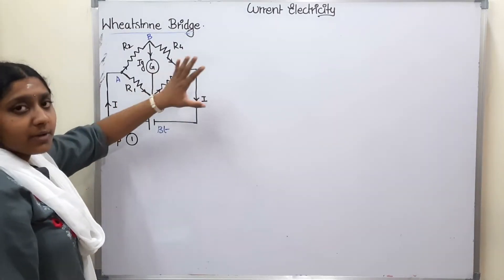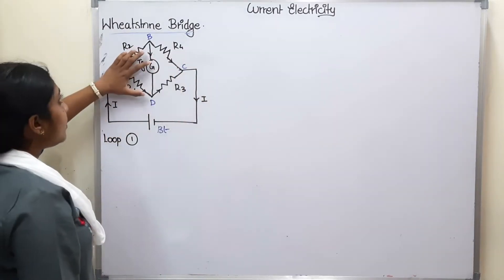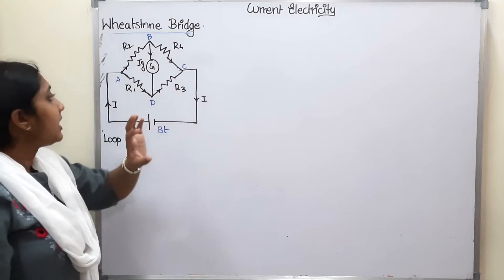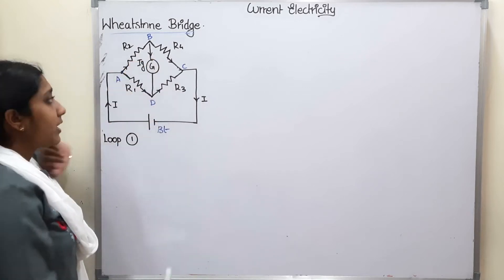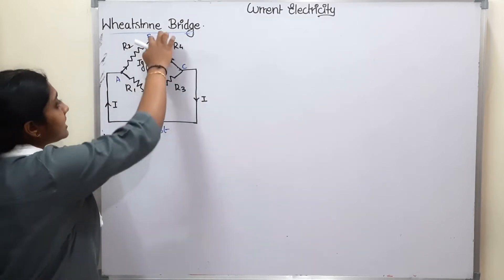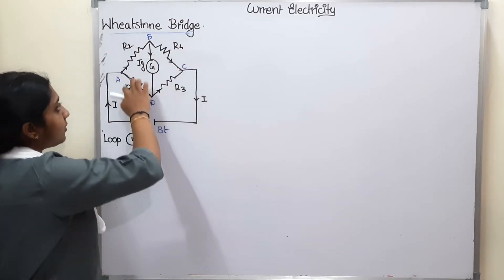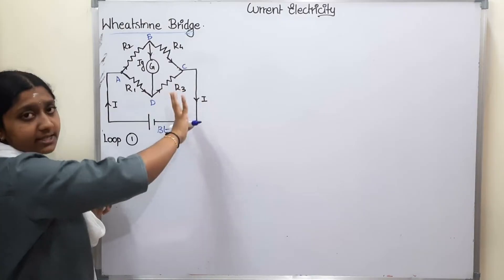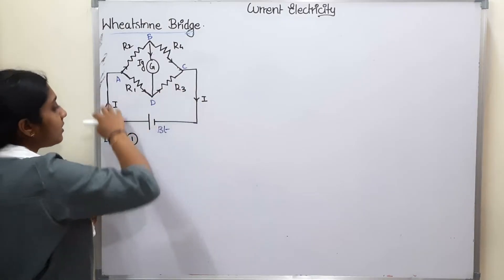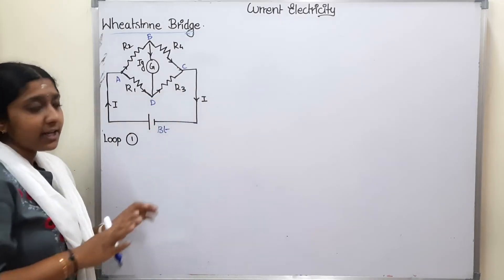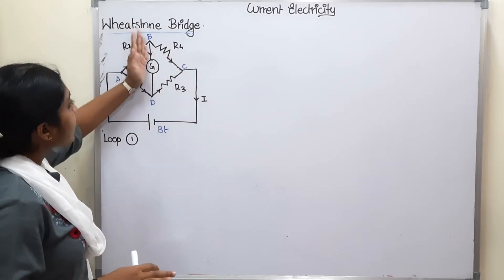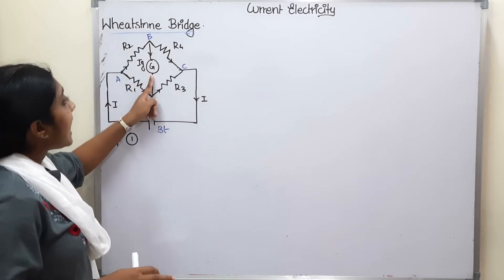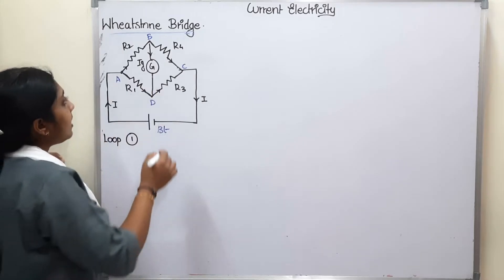We are going to talk about Wheatstone Bridge. First, there is a circuit. There are 4 resistances — 1, 2, 3, 4. There is a battery connector. There is a diamond shape. If you look at the angle, there is a galvanometer arm.